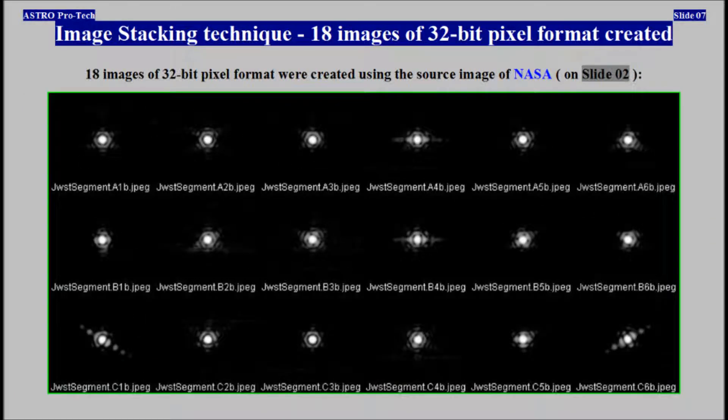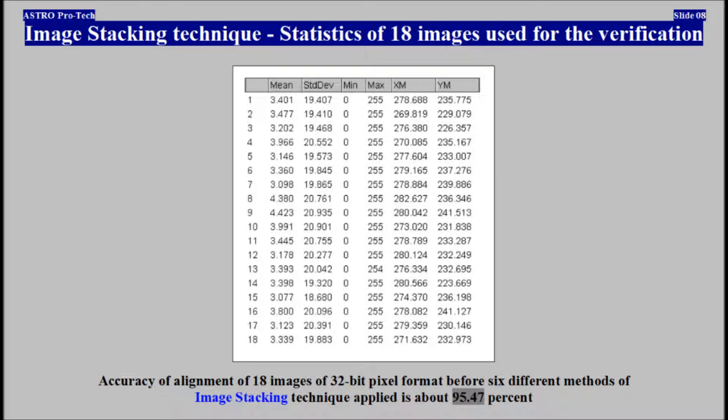18 images of 32-bit pixel format were created using the source image of NASA. The accuracy of alignment of these 18 images of 32-bit pixel format, before the six different methods of image stacking technique were applied, is about 95.47%.